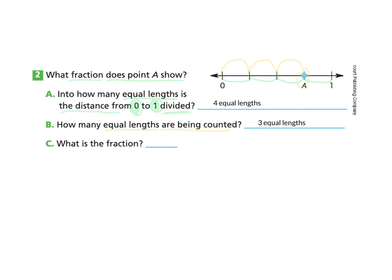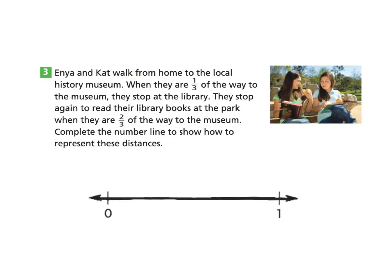Now let's look at Part C: what is the fraction? You may pause and try this on your own and come back to check your answer. We know there are 4 equal lengths from 0 to 1, so our denominator is 4. Point A is at the 3 equal lengths zone — 1, 2, 3 — so 3 is our numerator, the parts being counted. We make the fraction 3 fourths.